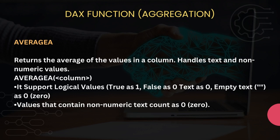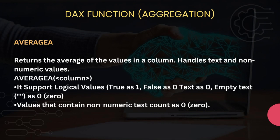AVERAGEA handles non-numeric values as follows: TRUE is treated as 1, FALSE is treated as 0, a text value is treated as 0, an empty text string is treated as 0, and non-numeric text is also counted as 0.